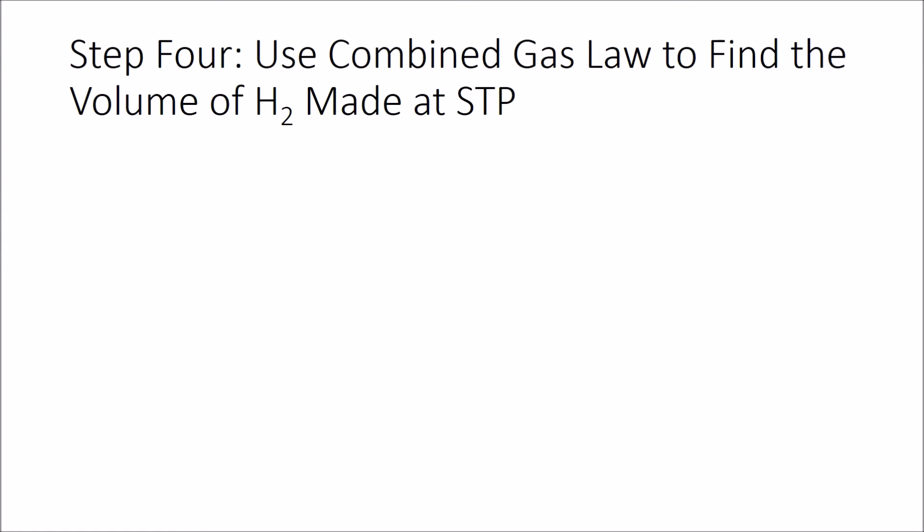Let's use the combined gas law to see how much hydrogen would be made at STP. We did this at atmospheric pressure and room temperature, and we want to change that to standard temperature and pressure. So this is the equation we use, the combined gas law. P1 V1 over T1 equals P2 V2 over T2.